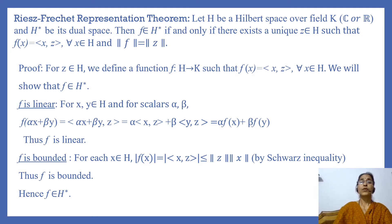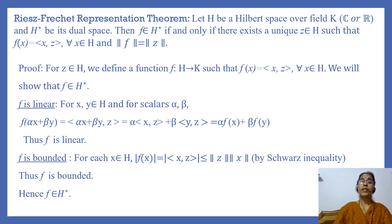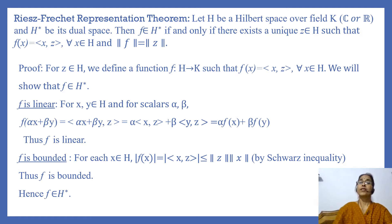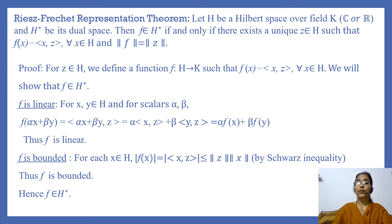First, F is linear. For X, Y in H and scalars alpha and beta, F of (alpha X plus beta Y) equals the inner product ⟨alpha X plus beta Y, Z⟩, by definition of F. Since the inner product is linear in the first argument, this equals alpha times ⟨X, Z⟩ plus beta times ⟨Y, Z⟩, which by definition of F equals alpha F(X) plus beta F(Y). Thus F is linear.